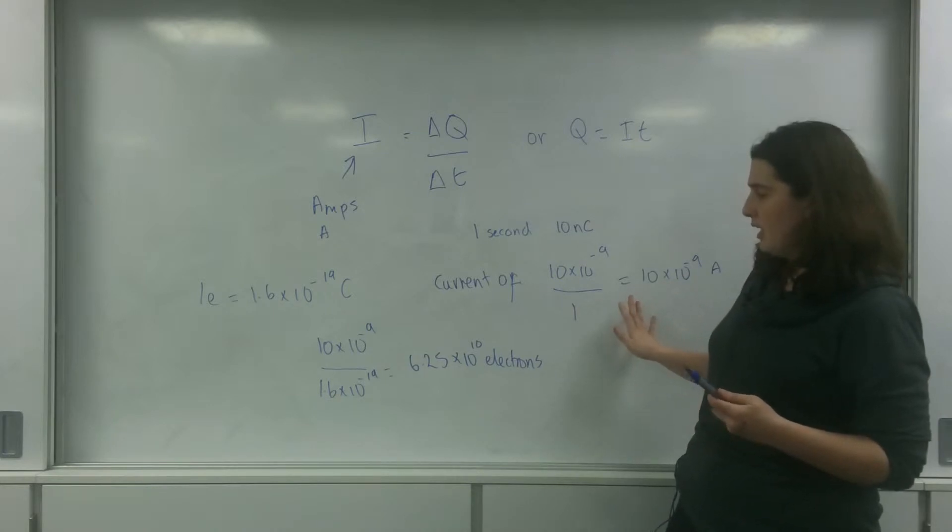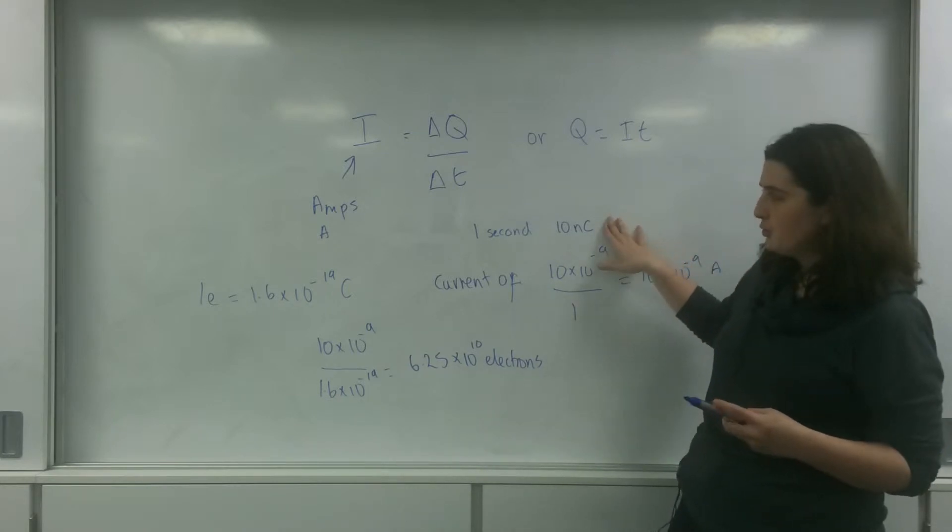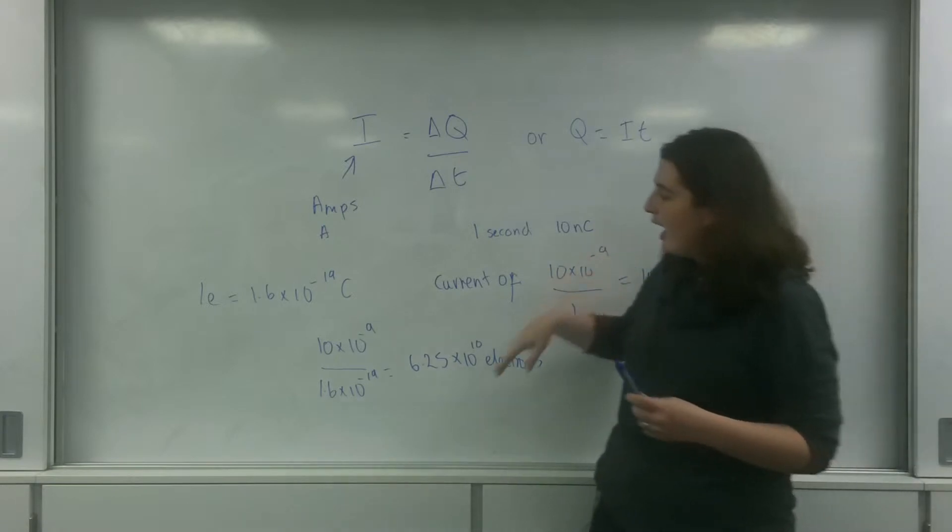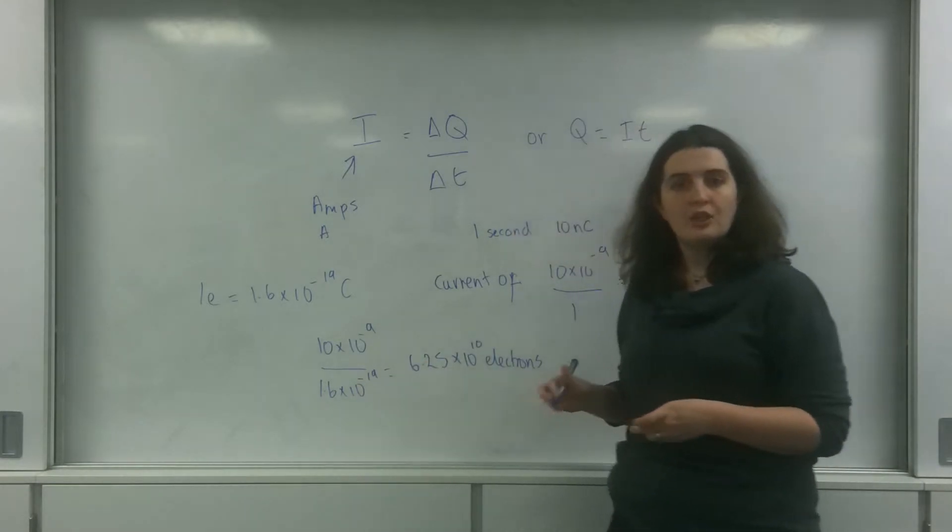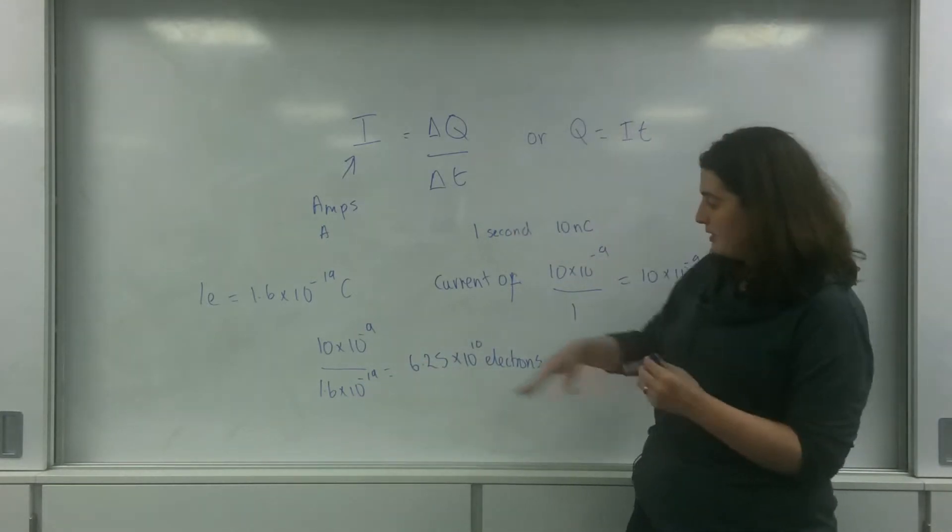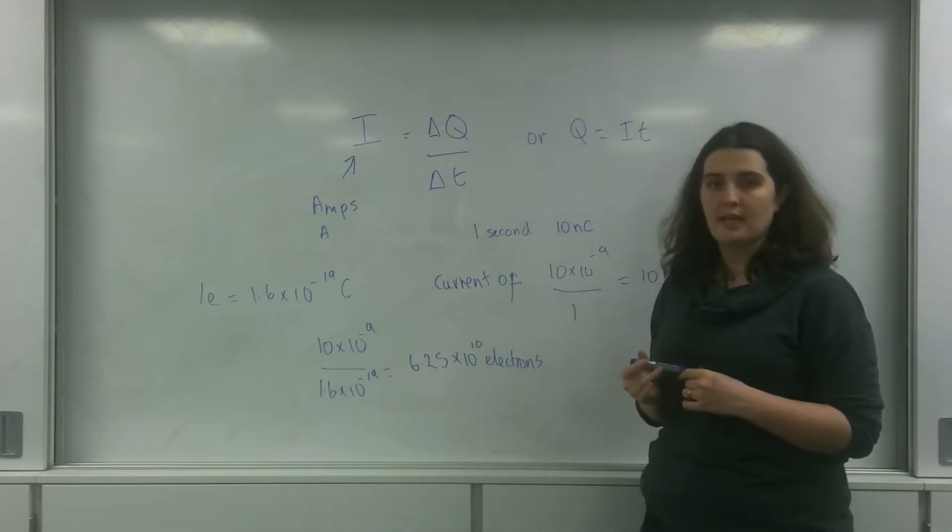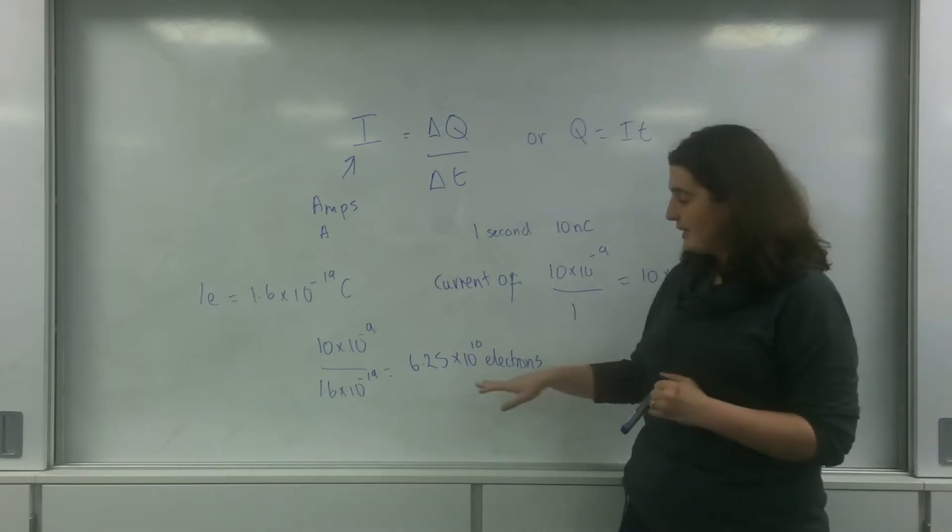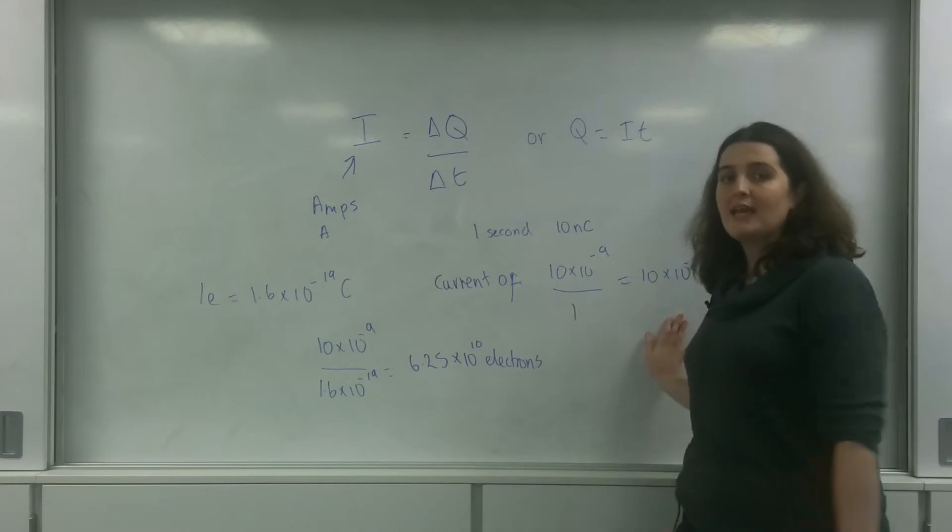I took the value of my charge, which was 10 nanocoulombs here, and I divided it by the charge of an electron. It gave me 6.25 times 10 to the 10. So this is how many electrons are causing this current here.